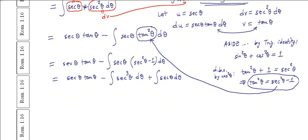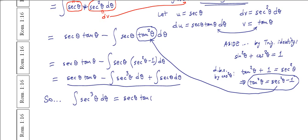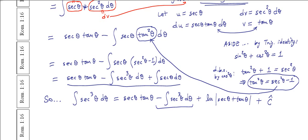We're not going in circles here. Let's summarize what we have: the integral of secant cubed theta d theta equals secant theta tan theta, minus the integral of secant cubed theta d theta, plus the integral of secant theta d theta. We found the integral of secant theta in the very first of these videos.